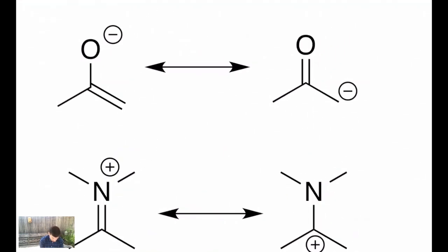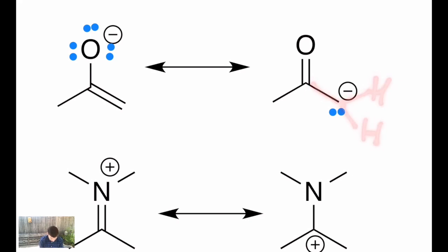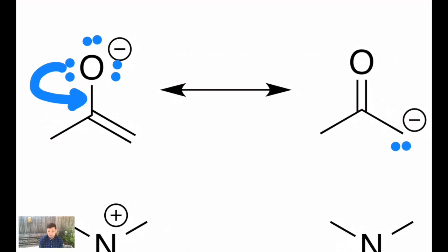There are three lone pairs on the oxygen at the top, and on the structure on the right there's one lone pair on the carbon with the negative charge — I know that because the formal charge communicates it. A negatively charged carbon atom has three bonds and one lone pair: carbon-carbon, carbon-hydrogen, and carbon-hydrogen, though in a line structure those hydrogens are invisible. So how do I draw my curved arrows? Draw an arrow from a lone pair on the oxygen down into the carbon-oxygen pi bond, then draw a second arrow from that pi bond to directly on top of the carbon atom.